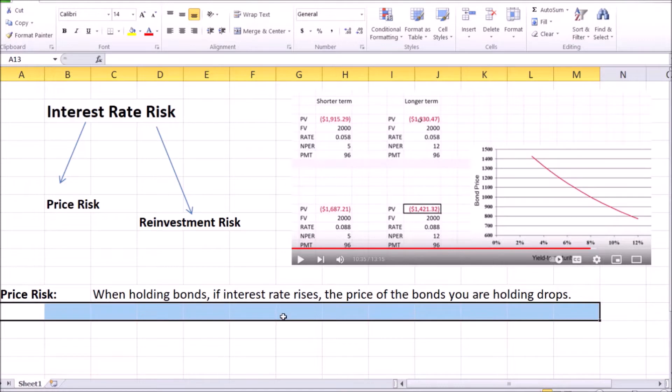But if the bondholder has to sell the bonds for whatever reason before they mature, then the price risk can damage you if the bond price drops due to higher interest rates, especially if it happens just before you plan to sell those bonds.